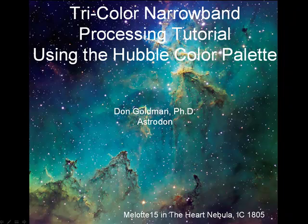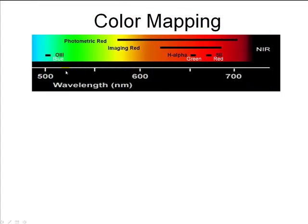This tutorial is about the processing of tricolor narrowband data using the Hubble color palette. The Hubble palette maps O3 data to blue, hydrogen alpha data to green, and S2 data to red in order of increasing wavelength. You have to do something because both the hydrogen alpha and sulfur data are red, so you have to separate them somehow.